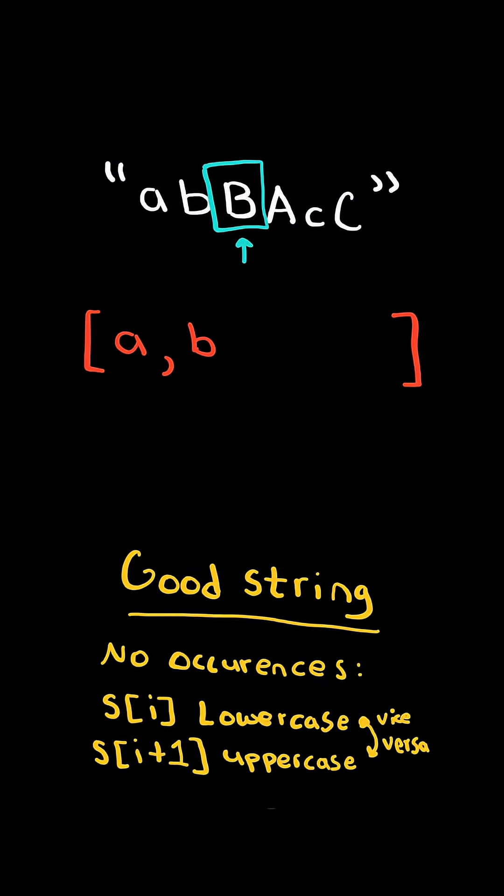Every time we encounter a character, we check if the opposite case of that character exists at the top of the stack. If so, we pop the character and continue.